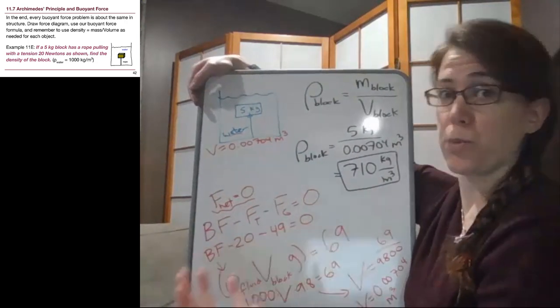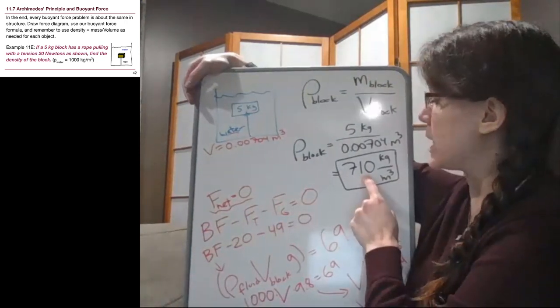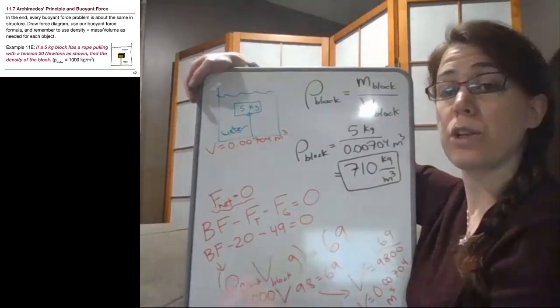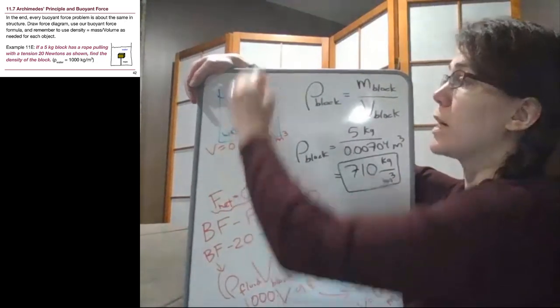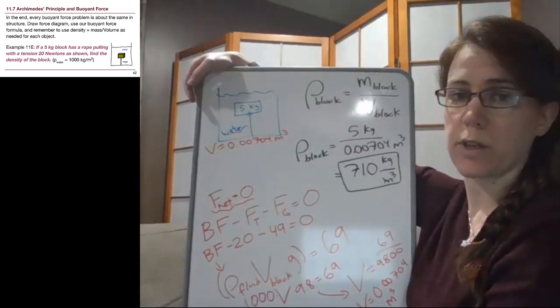So it's not like something super, super light and fluffy. But it is less than 1,000, which is what we knew had to happen for this to be trying to rise to the surface.